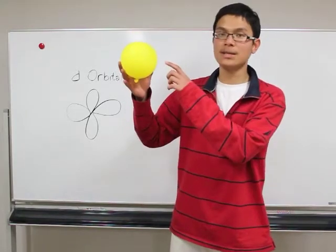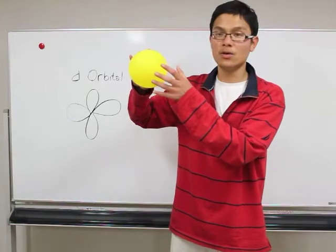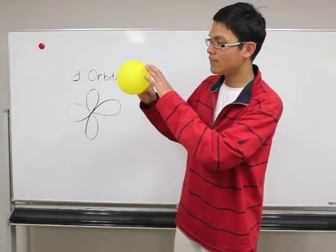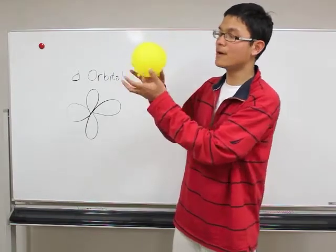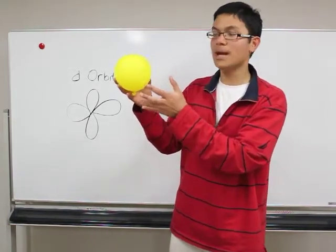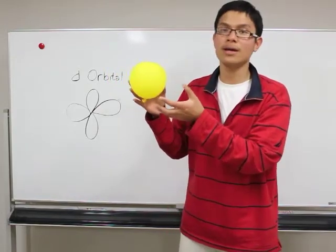For example, if we imagine that inside this balloon is a nucleus in the center, we can imagine that the area that this sphere balloon is enclosing is an area where most likely an electron can be found. And this area is what we call orbitals.